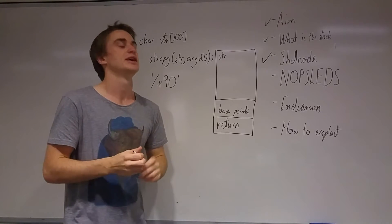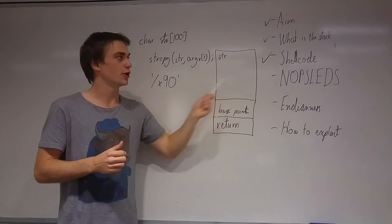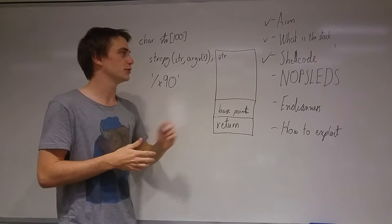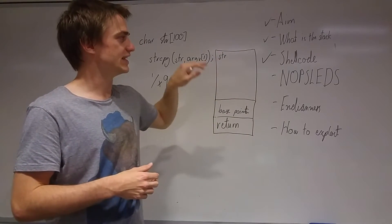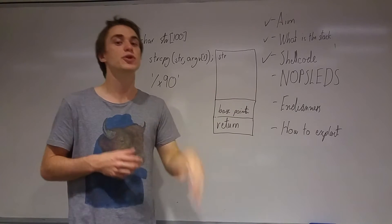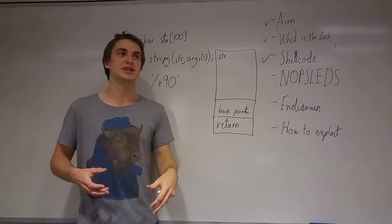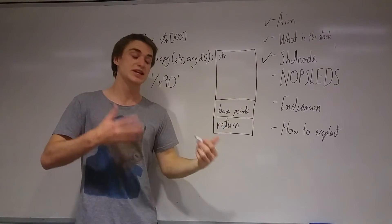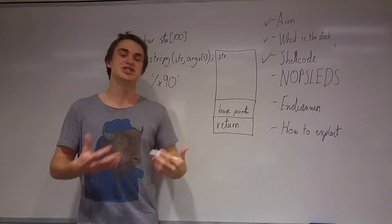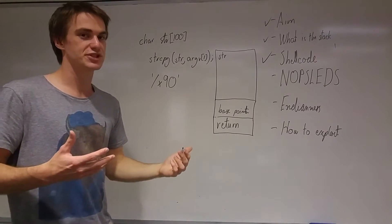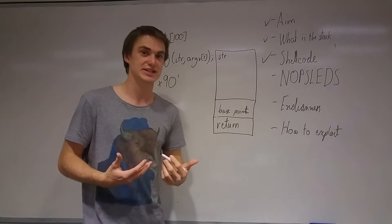The cool thing about this is, imagine with our shellcode if we didn't have this and we were to try and return to our shellcode, we would have to get it exactly right. Although this may not seem like such a big thing, basically randomizes a little bit depending on your environment and it changes. If we don't have to be as precise, that makes our lives a lot easier.